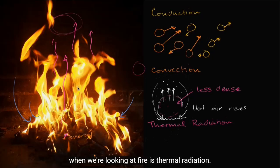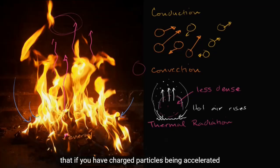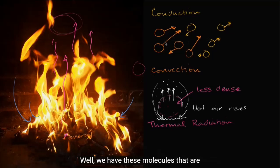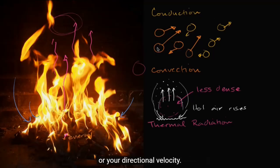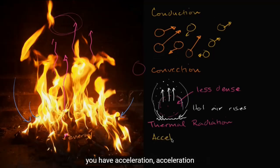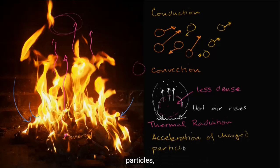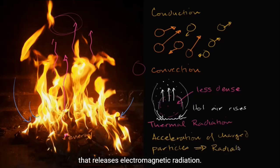The last form we're observing when looking at fire is thermal radiation. This is all around the idea that if you have charged particles being accelerated, they're going to release electromagnetic radiation. You might ask where charged particles are being accelerated here. Well, we have molecules that are constantly being accelerated as they bump into each other — one bumps into another, transferring kinetic energy and accelerating it in a different direction. Acceleration is a change in velocity, whether in magnitude or direction. So as they're colliding, you have acceleration of charged particles, and that releases electromagnetic radiation.